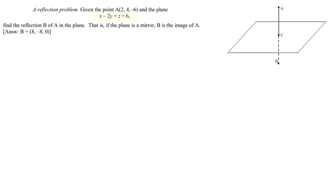Let's suppose we have a particular plane with equation x minus 2y plus z equals 6, and a particular point A with coordinates 2, 4, minus 6. You can check that A doesn't sit on that plane because the numbers 2, 4, minus 6 don't satisfy the equation of the plane.